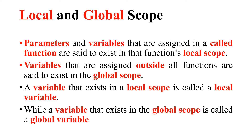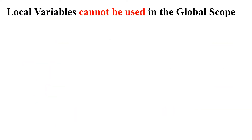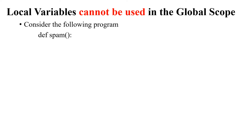Now let us consider these concepts in detail with suitable examples. First: local variables cannot be used in the global scope. That means if a variable is local, trying to use it in the global scope is not permitted. Consider the following program — here I'm defining 'def spam', where 'def' is the keyword and 'spam' is the name of the function.